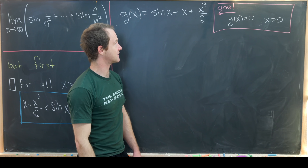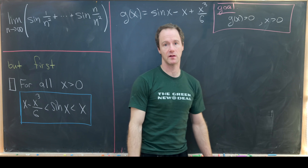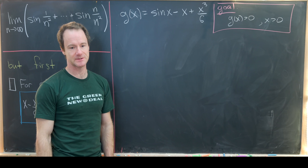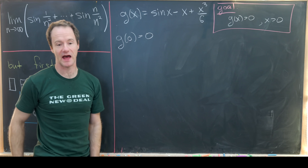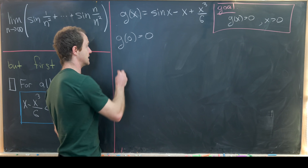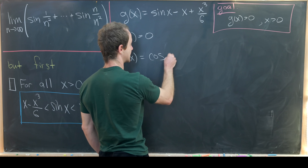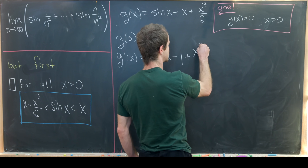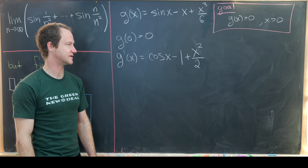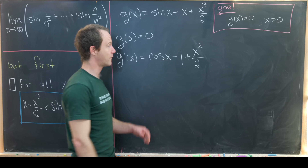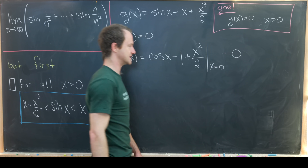We start by noticing that g of 0 is equal to 0, just as before. Then we look at the derivative: g prime of x equals cosine of x minus 1 plus x squared over 2. It's a little bit hard to get a handle on the size of this, so we'll need to go one layer further. Evaluating g prime at x equals 0 gives 0.